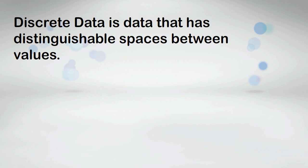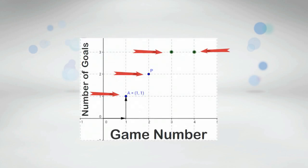Discrete data is data that has distinguishable spaces between the values. Often it is data that is counted. On a graph, the ordered pairs are at specific locations so the graph is not connected but only points.